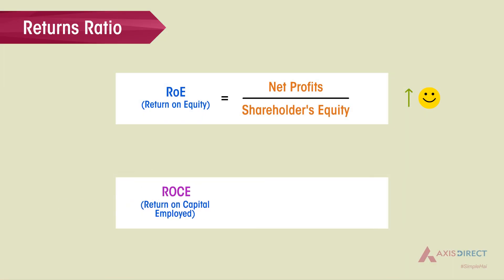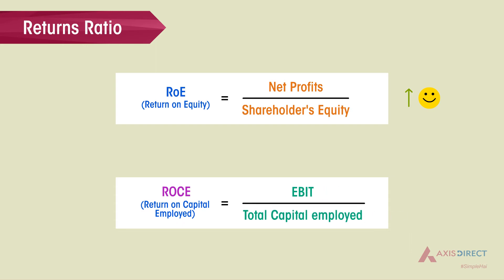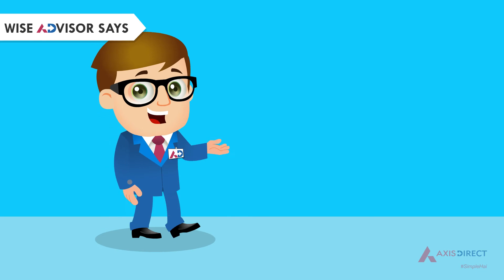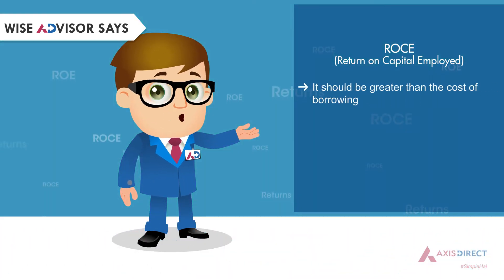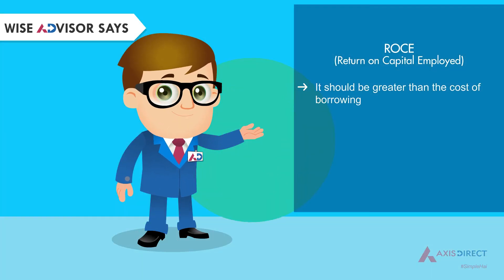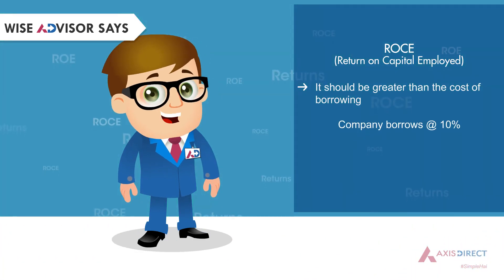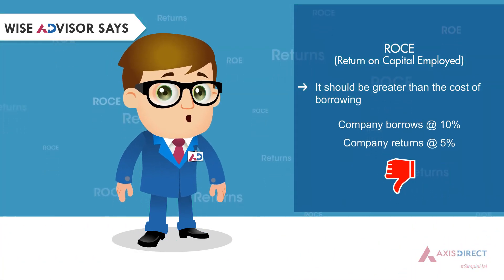Return on Capital Employed: this ratio measures how the company is utilizing available capital to generate profits. Here, EBITDA is earnings before interest and tax. A higher ROCE indicates the company generates more earnings per rupee of capital employed. ROCE should be greater than the cost of borrowing — if a company pays 10% interest and earns only 5% returns, it is not a good sign.